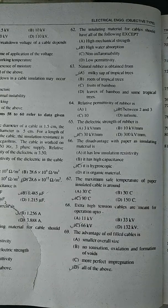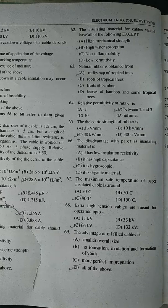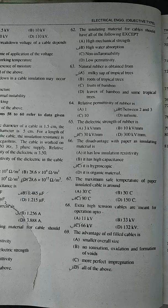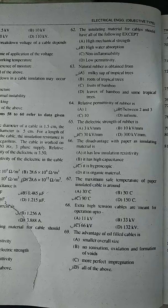66. The disadvantage with paper as an insulating material is that it is hygroscopic. The maximum safe temperature of paper insulated cable is around 90 degrees centigrade. Extra high-tension cables are meant for operation up to 66 kilovolts.